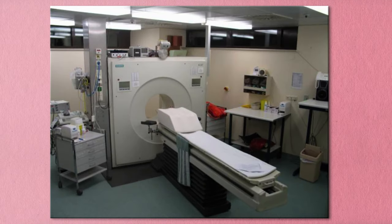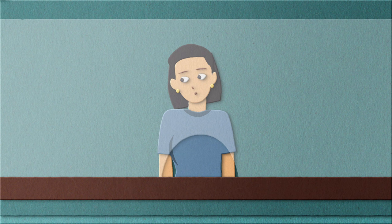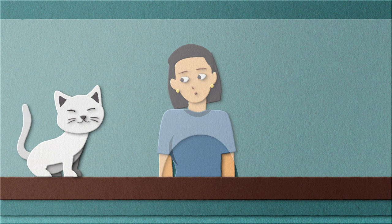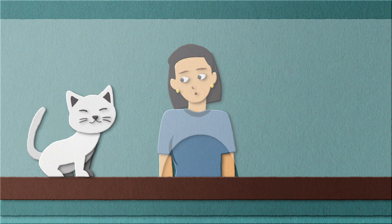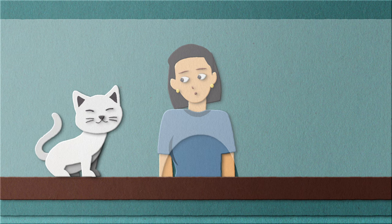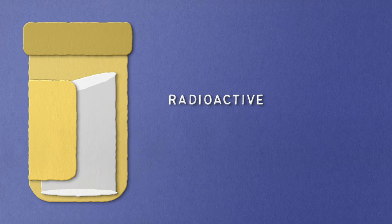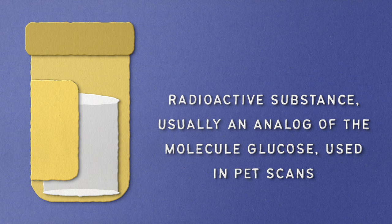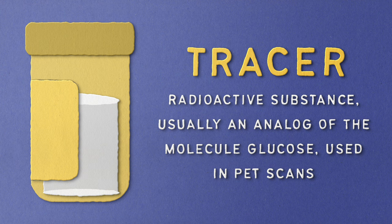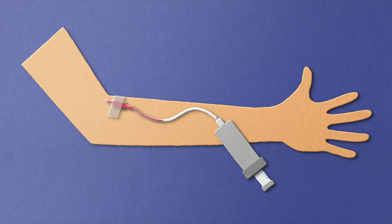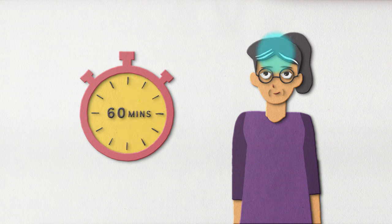The next medical imaging modality is PET — and no, it does not involve using a cat or dog to diagnose something. PET stands for positron emission tomography. Even though it's not as popular as the other modalities, it is still a very important one. PET scans are often used in the diagnosis and monitoring of cancer and neurologic diseases like Alzheimer's. It uses a radioactive substance — usually an analogue of the molecule glucose called a tracer — and a scanner to examine how your tissues or organs are functioning. Typically, the tracer is injected into the patient's vein so it can travel around in the blood, and it usually takes around one hour for the tracer to be absorbed by your body before the scan can begin.